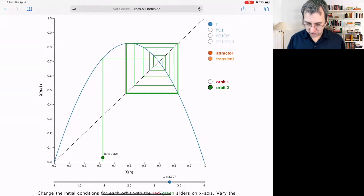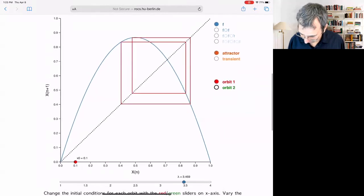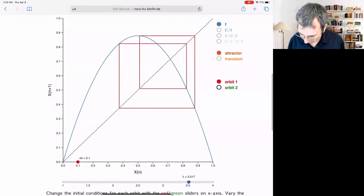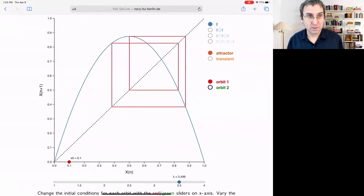What about roughly 3.3? So this is starting from some initial condition. It's hard to see. Maybe you could see again, period two. At 3.5, now on a period four orbit.